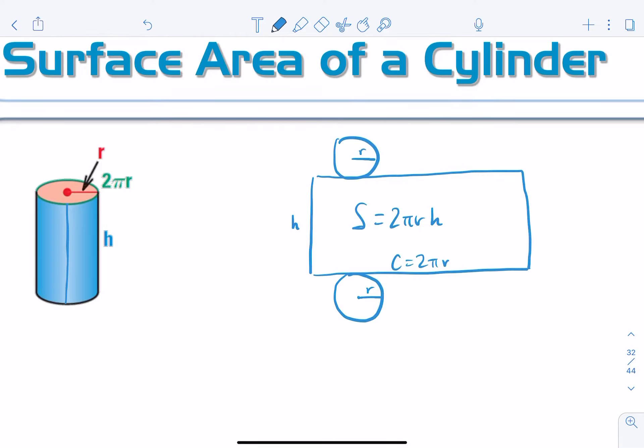And then if I want the total surface area, we just have to add in two of these circles. Each one of those circles is πr². Here's the lateral, and then we add in the two bases to get the total.